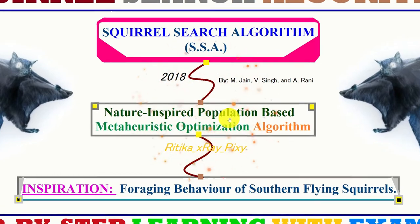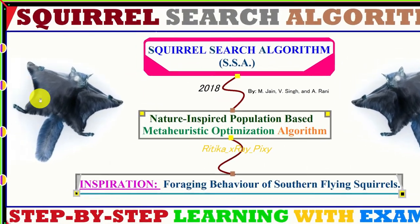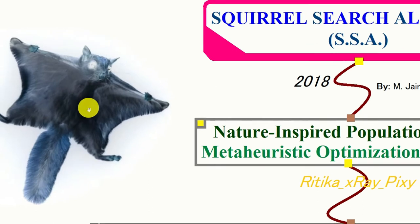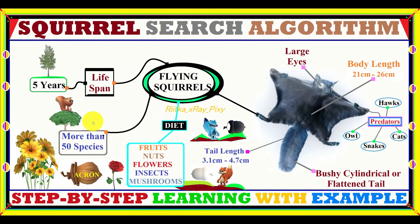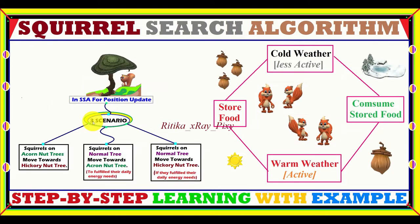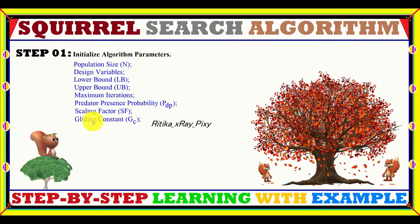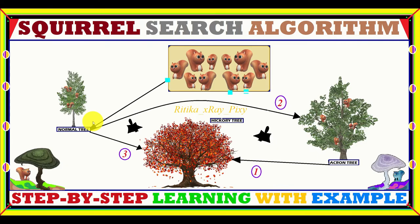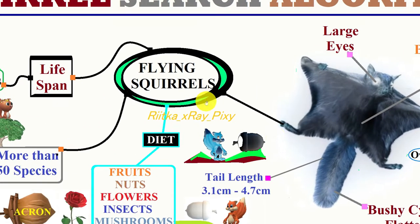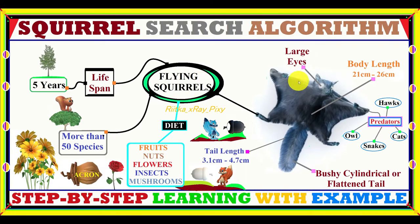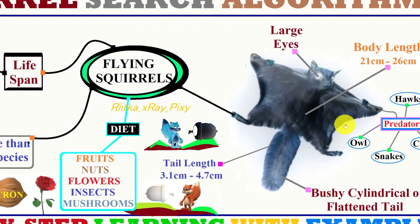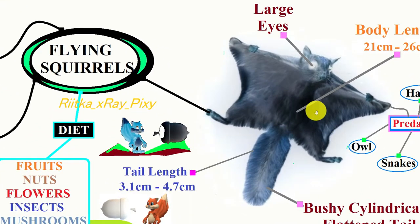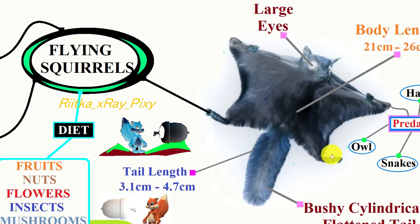This algorithm is basically inspired by the food foraging behavior of flying squirrels in real life. Flying squirrels are also known as gliding squirrels because they do not fly like birds but glide using a membrane to travel long distances in the forest.